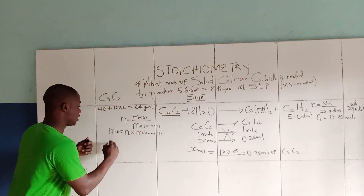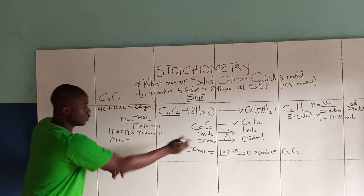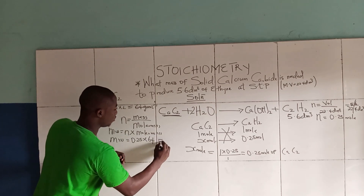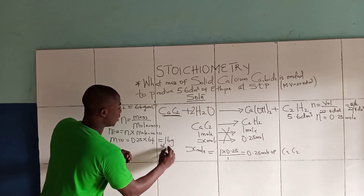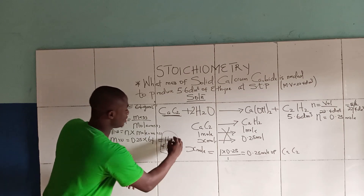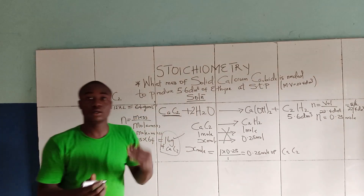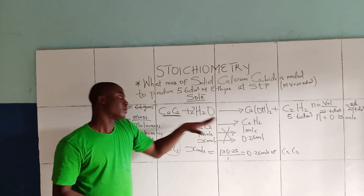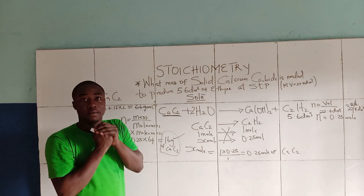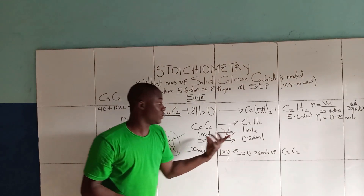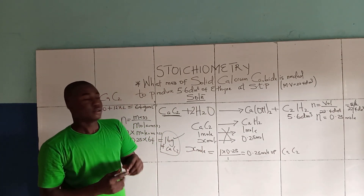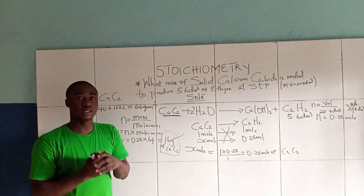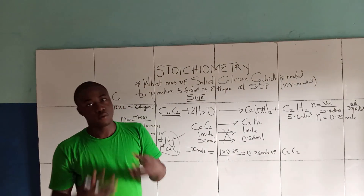Now we can find the mass. Mass equals number of moles times molar mass: 0.25 moles × 64 g/mol = 16 grams of solid calcium carbide. So this is the answer to this question. We got the reaction, did the stoichiometric balancing, brought down what we were interested in, and solved. We get 16 grams of solid calcium carbide. Thanks for watching.